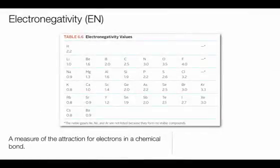We've mentioned the attraction between the electrons of one atom and the protons of another atom. The attraction that an atom has for another atom's electrons in a chemical bond is called electronegativity.